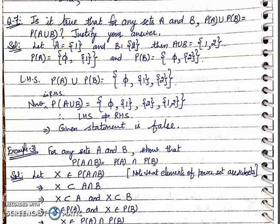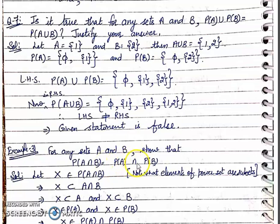So, what about the intersection? For the intersection, we will consider Example 31 of your miscellaneous exercise. Example 31 states: for any sets A and B, show that P(A∩B) = P(A)∩P(B).